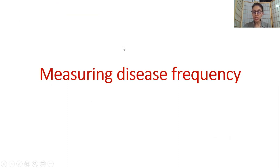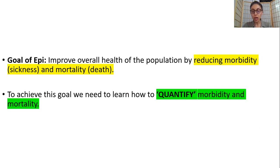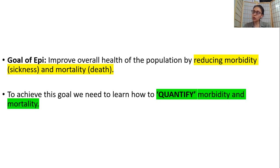Now, measuring disease frequency — this is what we're starting with first. We'll have a broad overview about epidemiology in your tutorials. The goal of epidemiology is to improve the health and well-being of the population, because epidemiology focuses from a preventative perspective first. Epidemiology wants to prevent a disease from happening, and if it's already happened, then it focuses on treatment and management. Epidemiology improves population health by reducing morbidity and mortality.